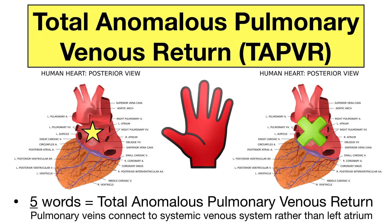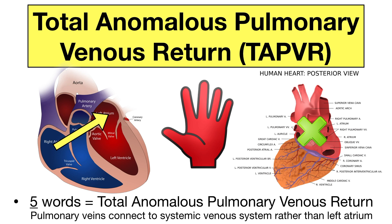Since the pulmonary veins are not delivering blood to the left atrium, there is usually an atrial septal defect present to allow blood to travel from the right atrium to the left atrium. The right atrial blood in this case is mixed oxygen-rich and oxygen-poor blood. So the left side of the heart receives less than normal oxygenated blood and delivers it to the rest of the body, which can cause cyanosis.